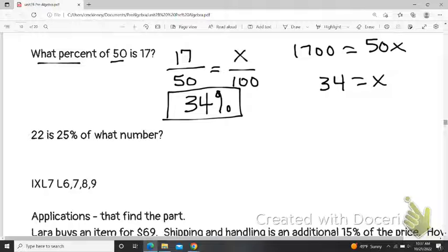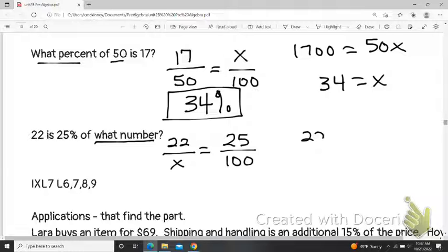Here, 22 is 25% of what number? So 25%, definitely 25 is over my 100. This after of, it says of what? So we don't know the base, and 22 is our part. So once we have things placed, we still cross-multiply, and then we'll still be dividing to solve.